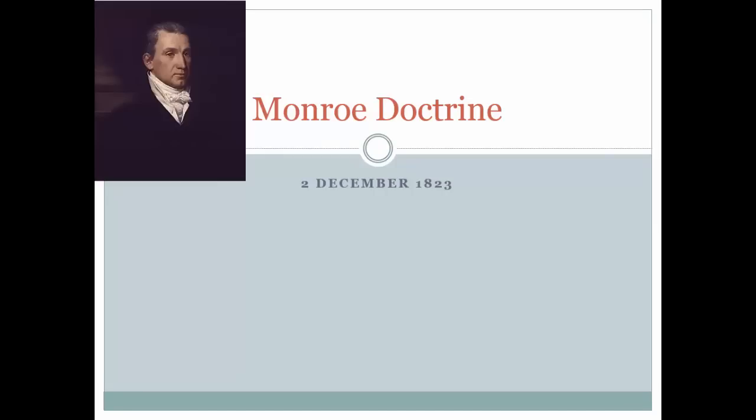James Monroe was President of the United States from 1817 to 1825. During his first term, the Federalist Party pretty much disappeared, so there were no other candidates when he ran for re-election. Some Americans considered this to be the end of the two-party system. Others, who were disappointed Federalists, sarcastically referred to the time period as the Era of Good Feelings.